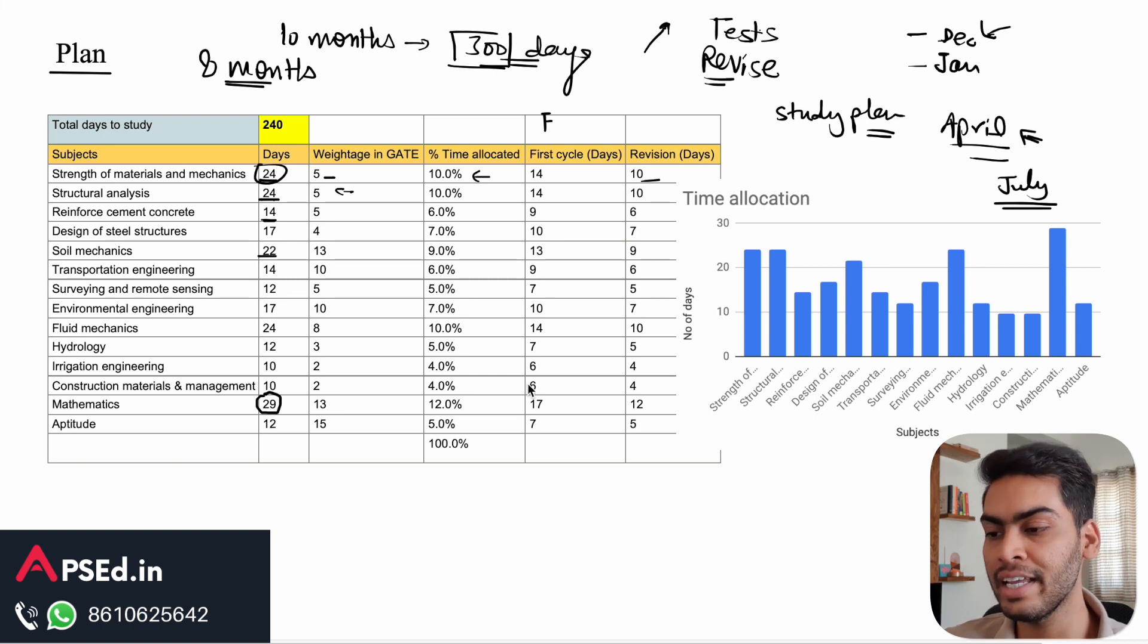Don't delay your preparation. Don't keep it off for July or August. Even if you are working in a job or in college, even if you can allocate a little bit of one or two hours per day for your preparation, it will give you a good start instead of starting in July.